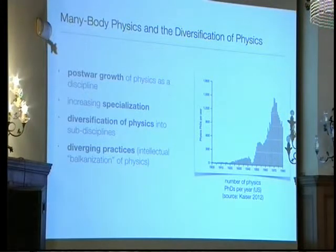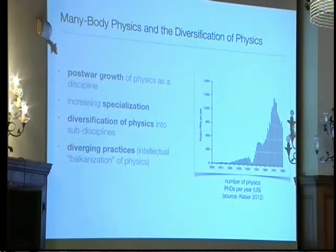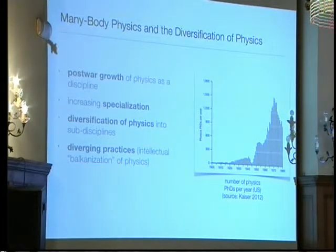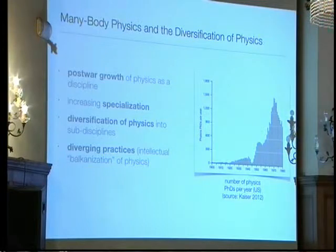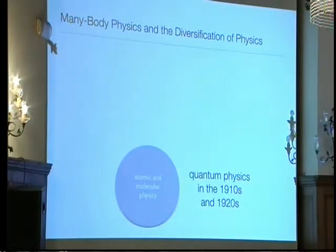In the post-war period, physics as a discipline grew tremendously. Here is a plot of the number of physics PhDs per year in the United States by Dave Kaiser, showing a huge surge after the war due to increased prestige of physicists and general growth in science. This increased the specialization of physicists. Physics diversified into sub-disciplines, and there was a general feeling among physicists that this led to a balkanization of physics, with practices diverging and cross-specialty communication becoming harder.